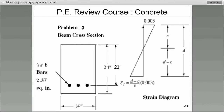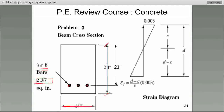Here is a problem — a cross-section of a beam. Let's do this problem together. It says there are three number eight bars. So either calculate the area of a number eight bar or look it up in the table. A sub s, the total area of the steel, is 2.37 square inches. The width is given to be 14 inches. The overall depth is 24 inches — remember, you only use that if it is uncracked or if you are finding the gross area. However, D, which is important, is given to be 21 inches — measured from the compression side to where the steel is located.